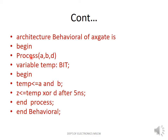In the begin of the architecture, we are using the process statement. In the process statement, we have to write the sensitivity list. The sensitivity list contains the inputs in the circuit — three inputs: A, B, and D. The output of the AND gate, temp, is not in the external view, so it is not in the entity or the sensitivity list. It has to be declared in the declarative part of the process statement.